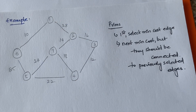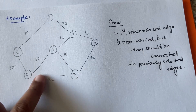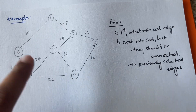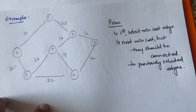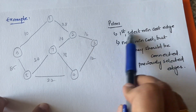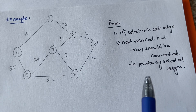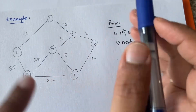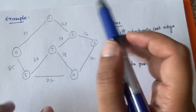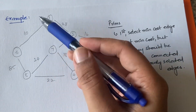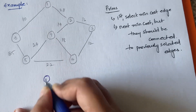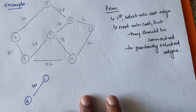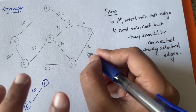This is the example graph we are going to use. We will apply both Prim's algorithm and Kruskal's algorithm on this graph and find the minimum cost spanning tree. In Prim's approach, you first select the minimum cost edge in the entire graph. The minimum cost edge here is 10, which is the edge between vertices 1, 2, and 6. So first select this edge with cost 10.